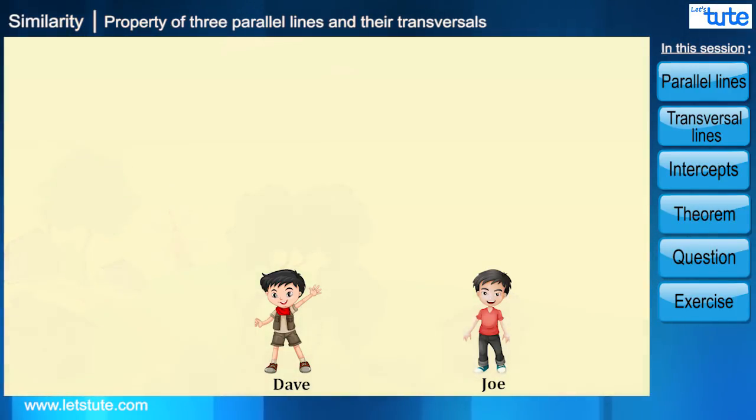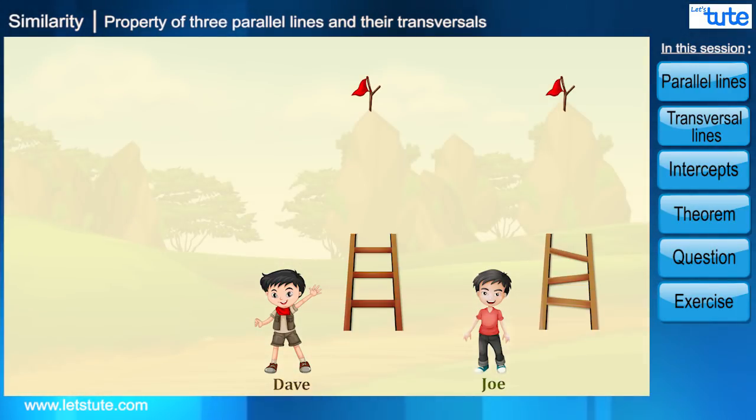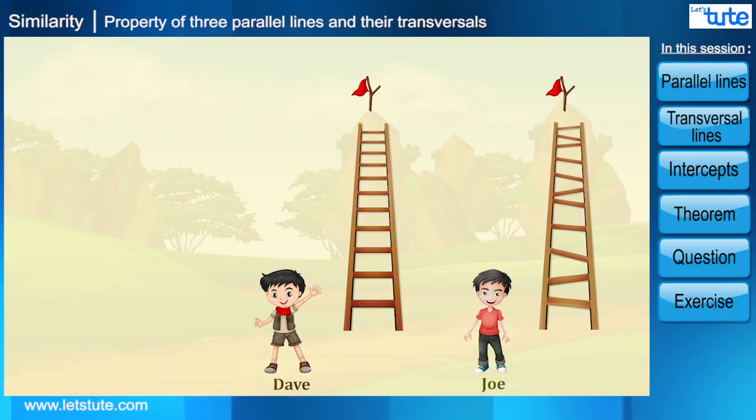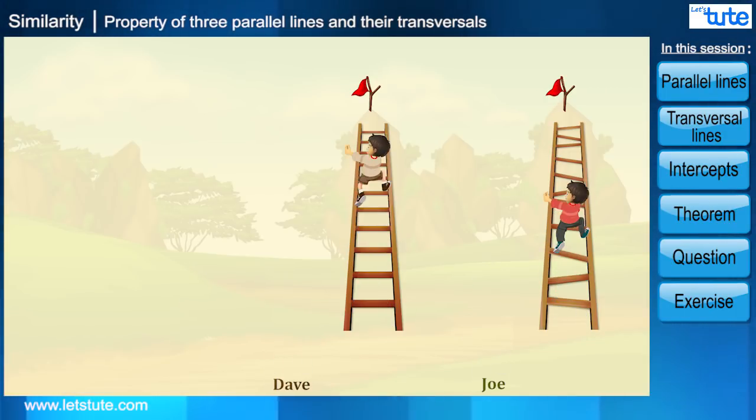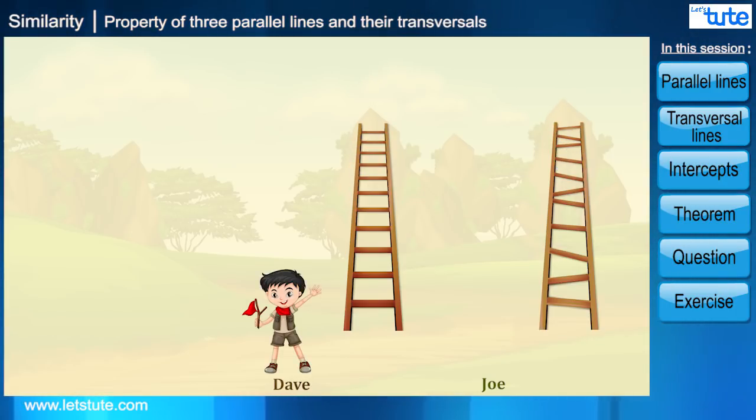So there were two ladders placed like this. At the first ladder Dave was there, on the other ladder Joe was there. Friends, who do you think will reach faster? Do you all think Dave? Yes friends, you got it right. Dave easily climbed the ladder, collected the flag, stepped down, and won the prize.